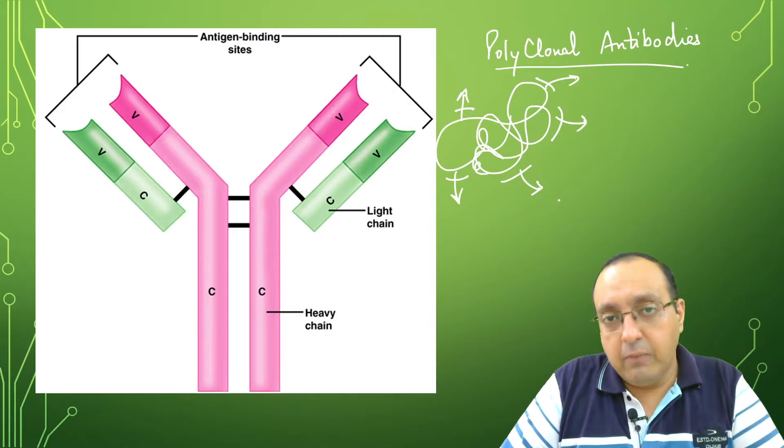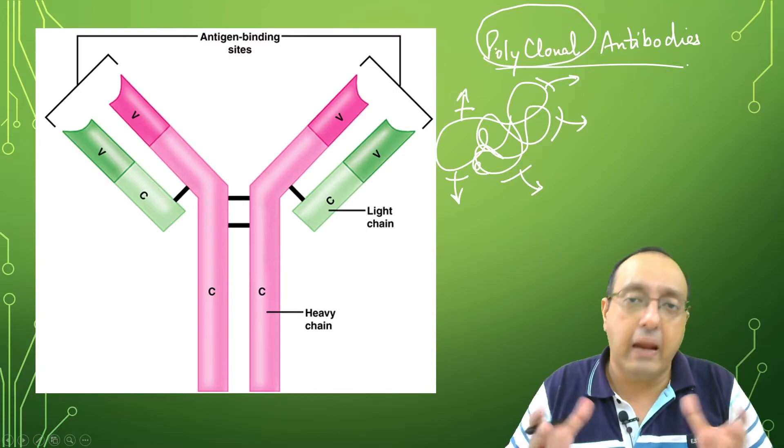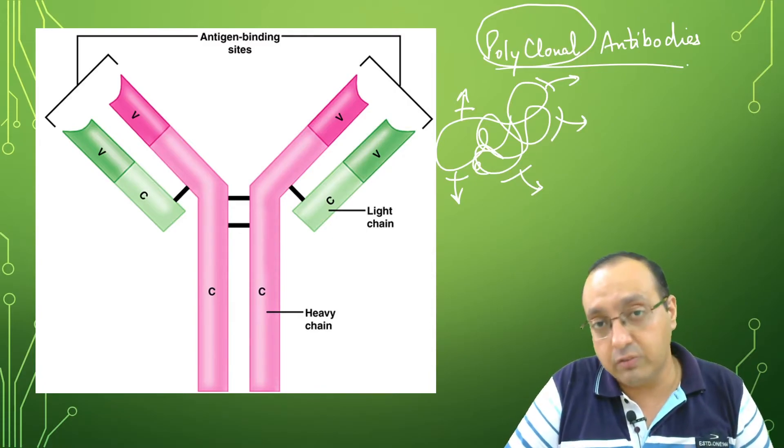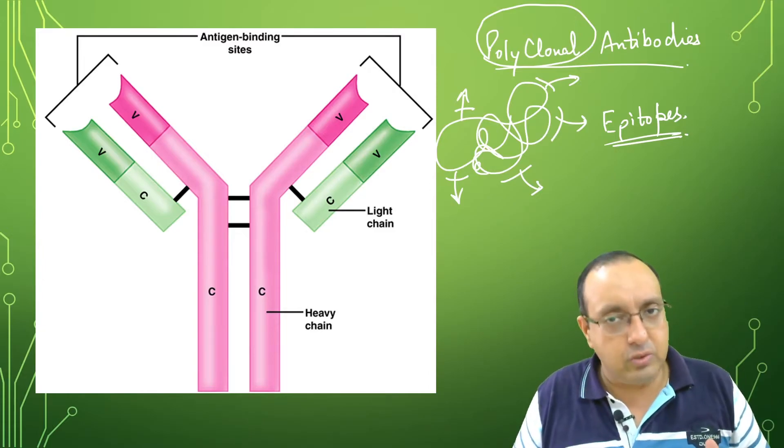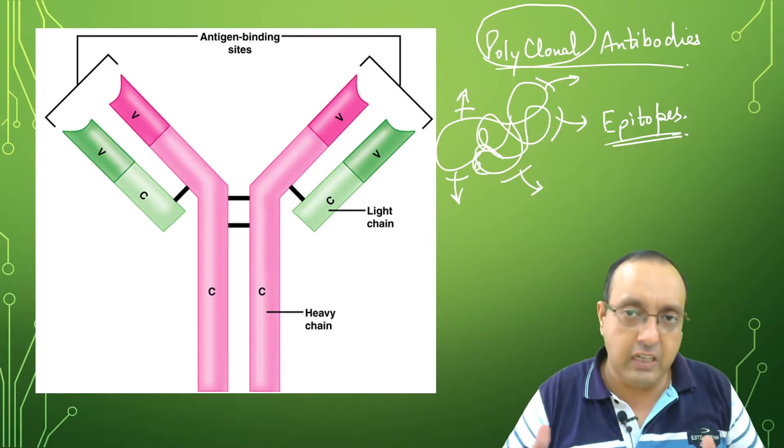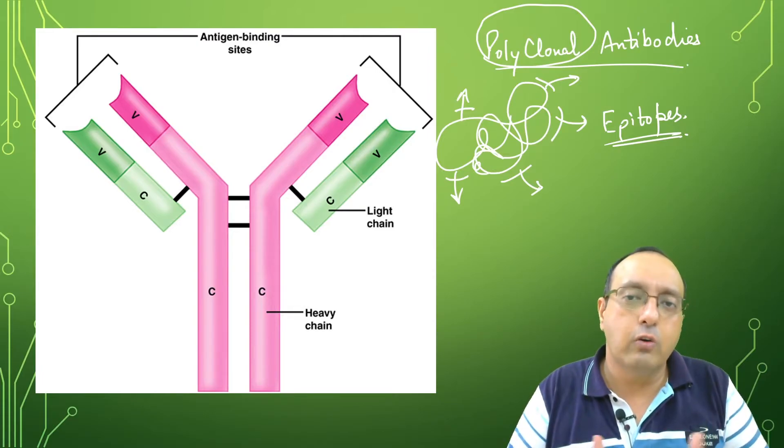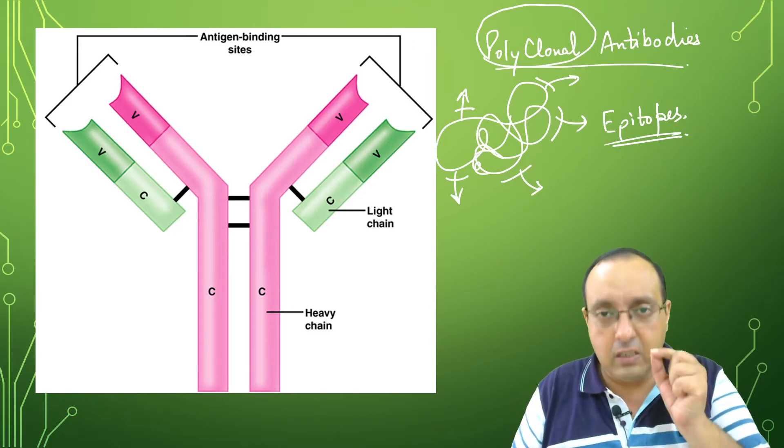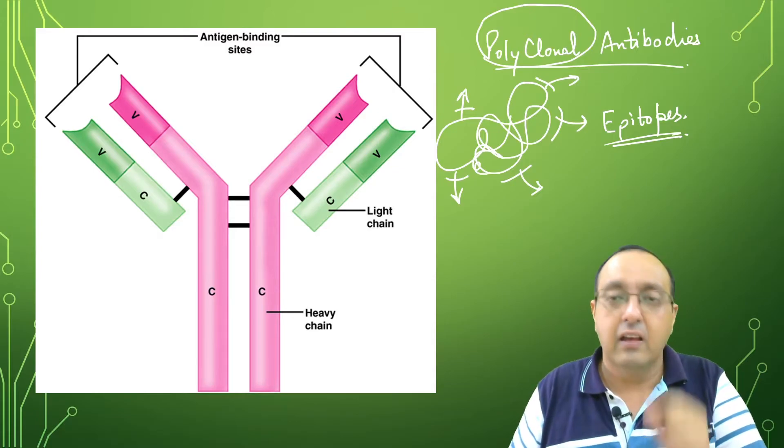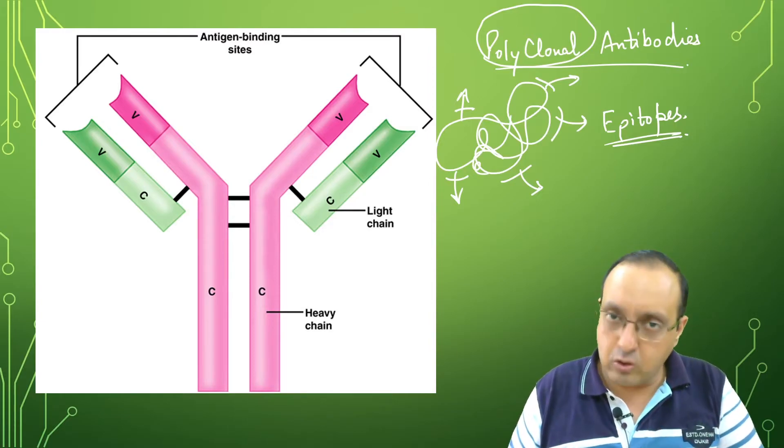These antibodies are called polyclonal antibodies because they recognize different epitopes, different regions of the antigen. This is great for the immune system because it can target different parts of the antigen, helping in neutralization of the pathogen. But it's not very good for diagnostic or therapeutic purposes. We need antibodies with targeted, defined, and reproducible specificity.